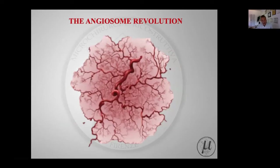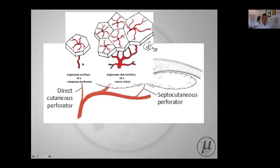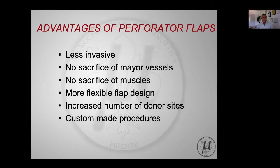The knowledge of the angiosome is the real clear kickoff point of perforator flap philosophy. This is the main source vessel - a deep vessel - and you find here the three types of perforator which can supply the skin. Any single perforator artery supplies a single angiosome, and these are connected to each other to form a network of different angiosomes connected by potential links.